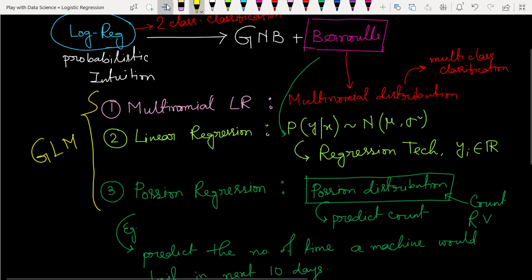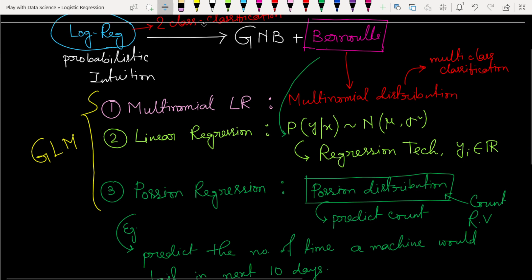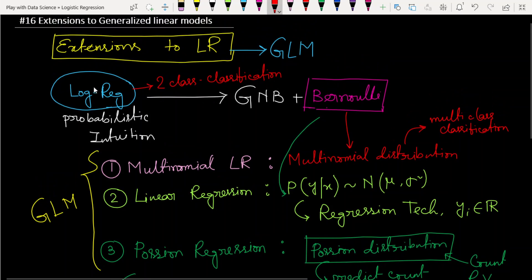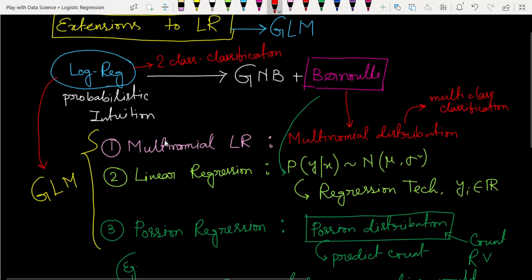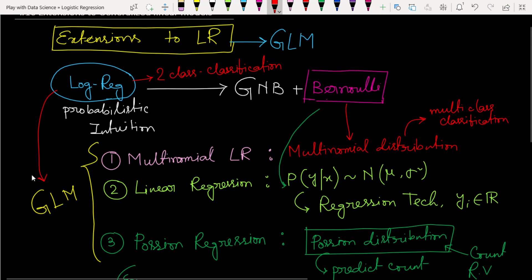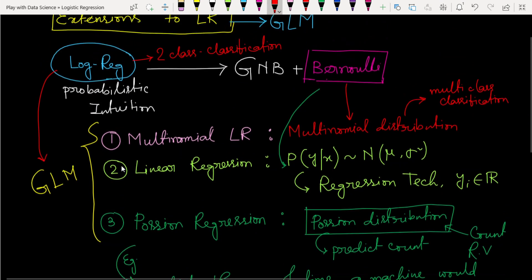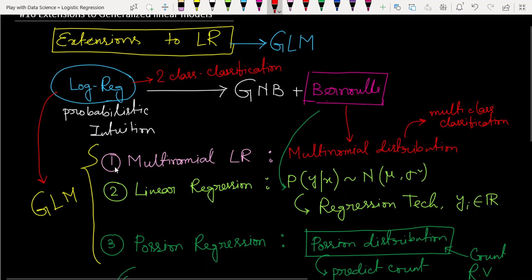So logistic regression is one kind of generalized linear model. All these kinds of models — multinomial logistic regression, linear regression, Poisson regression — are generalized linear models. In the next chapter we will learn in detail about the generalized linear model.